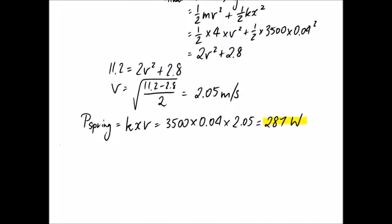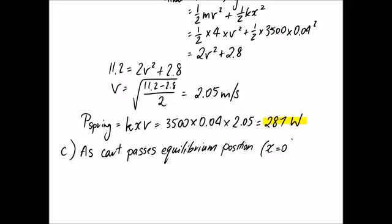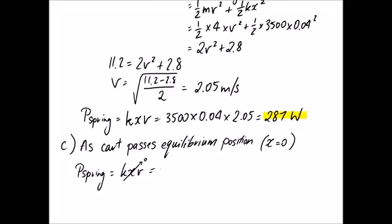Part c. So part c, it's as the cart passes equilibrium. So if it's at the equilibrium position, that means that we're going to have no spring compression. So x is equal to 0. So remembering back, P spring is equal to kxv. And x is going to be 0. So although we do have a velocity at this point in time, it doesn't really matter because overall it's going to be supplying 0 watts again. So that's the answer to that question.